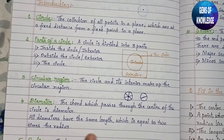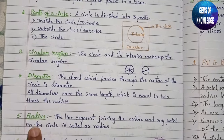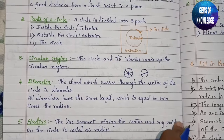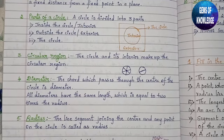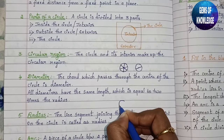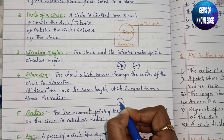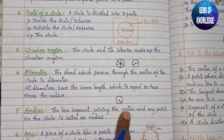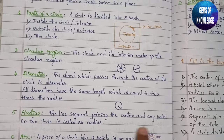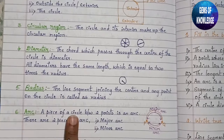Two times the radius equals the diameter. The radius is the line segment joining the center and any point on the circle — from the center point to any point on the circle, that particular line segment is known as the radius.